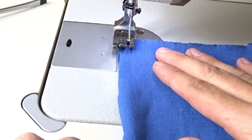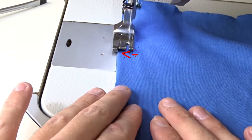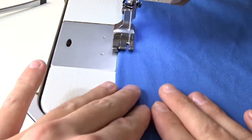Now let's attach these two pieces together. Align the fabric with the side edge guide of the compensating foot and start sewing.